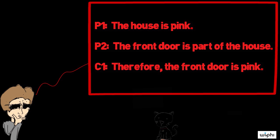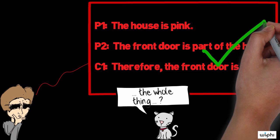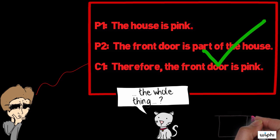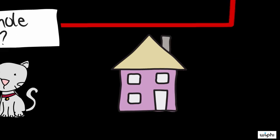And in this case, my argument leads to a true conclusion. For I've, for whatever reason, painted every part of my house pink. Simply because there's fallacious reasoning doesn't necessarily mean that the conclusion will be false.